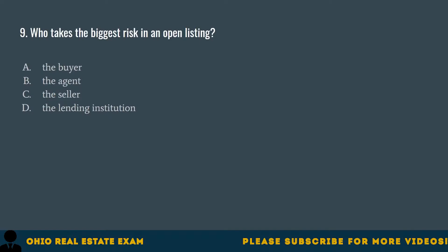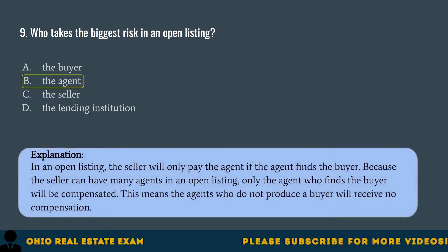Question 9. Who takes the biggest risk in an open listing? A. The buyer. B. The agent. C. The seller. D. The lending institution. The correct answer is B. The agent. In an open listing, the seller will only pay the agent if the agent finds the buyer. Because the seller can have many agents in an open listing, only the agent who finds the buyer will be compensated. Agents who do not produce a buyer will receive no compensation.